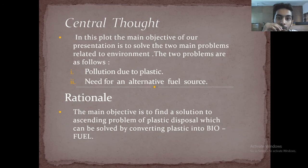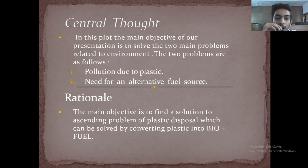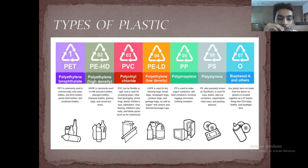The central thought behind this is to reduce pollution due to plastic and the need for an alternative fuel source. There are mainly seven types of plastic and they are PET, PEHD, PEGC, PELD, PP, PS, and O.